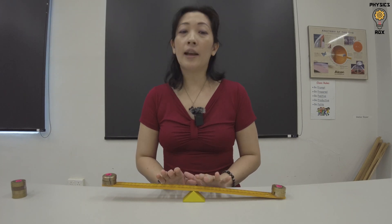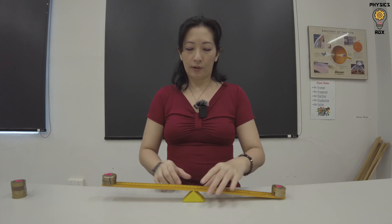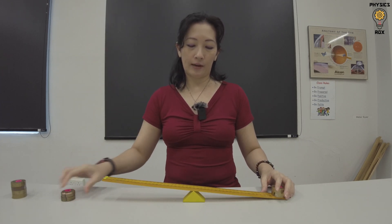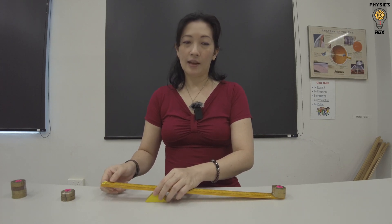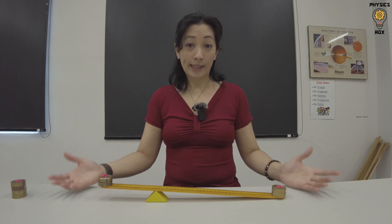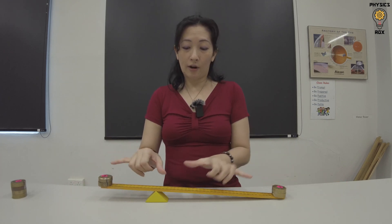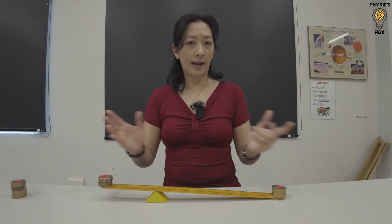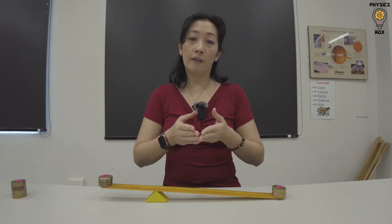Now, moments, if you recall, is force times perpendicular distance. So, if we were to shift the pivot somewhere else instead, obviously, it's not going to be balanced. Because, first of all, these two weights are not at equal distances from the pivot. And secondly, the weight of the uniform meter rule also affects the moment.